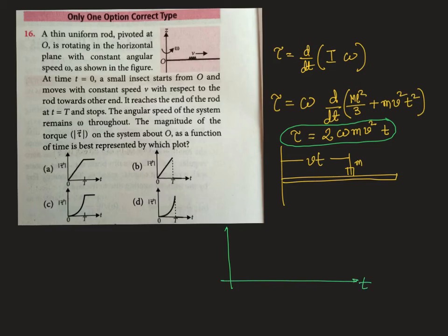We plot time here and torque here. This is up to time capital T. And from then, when time is greater than capital T, then it becomes 0. So the most appropriate curve is here, D.